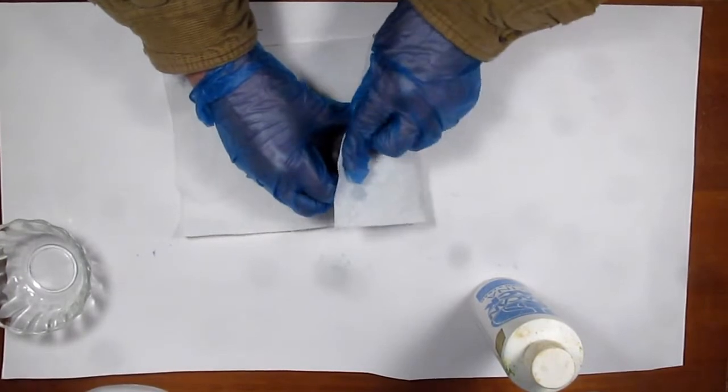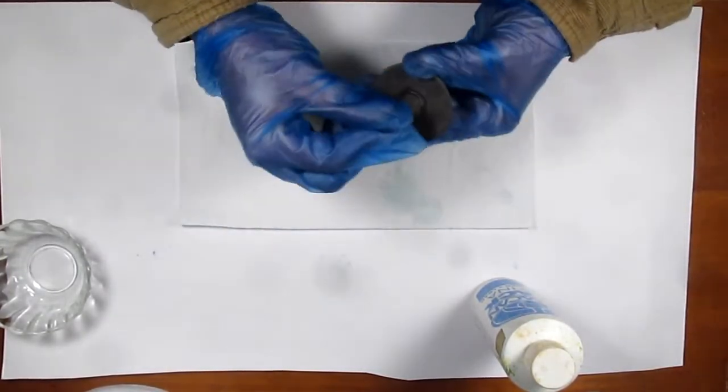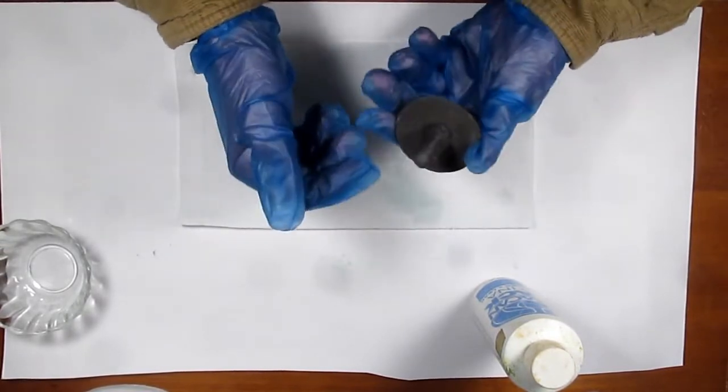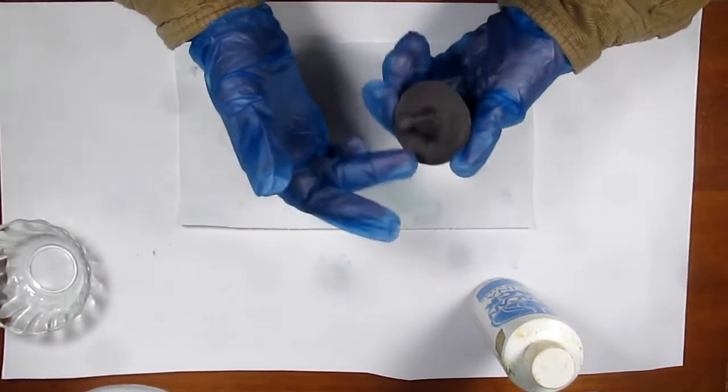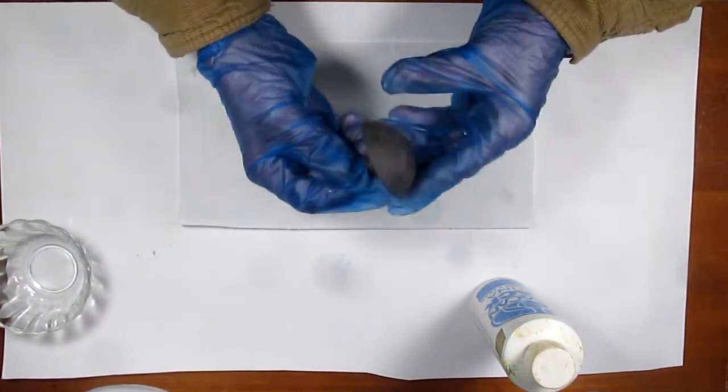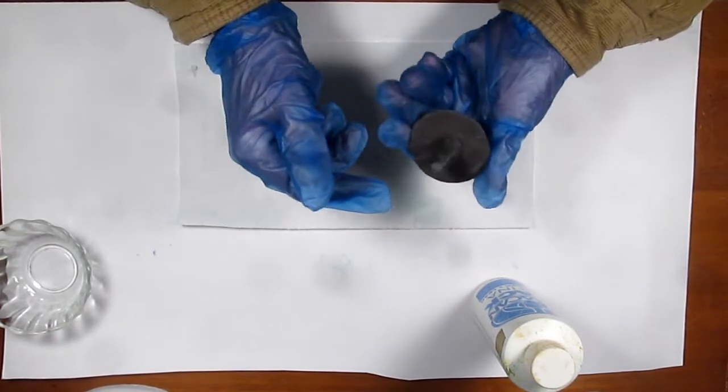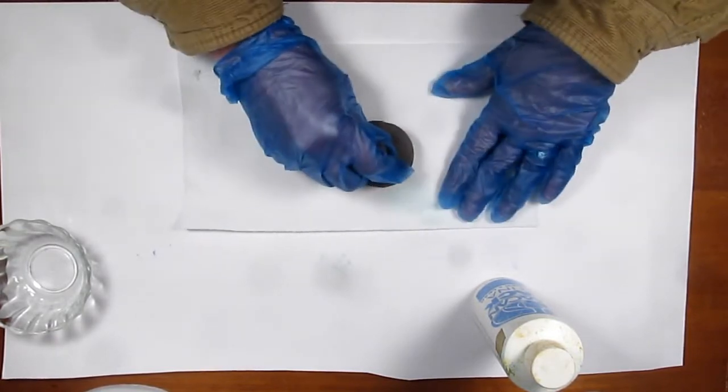I might take some Pledge furniture polish and apply it to this. It would shine it up and take away a little bit of that chalkiness. The matte finish would be a little bit shiny, but still dull. So I hope this helps.